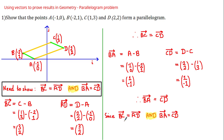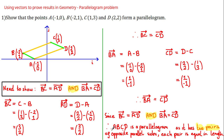We've shown that vector BA equals vector CD. So to conclude: since vector BC equals vector AD and vector BA equals vector CD, it follows that ABCD is indeed a parallelogram, as it has two pairs of opposite parallel sides where each pair is equal in length.